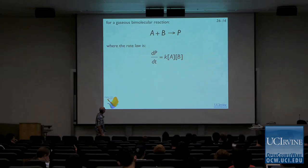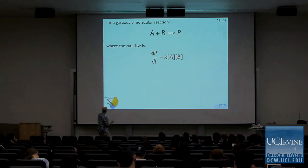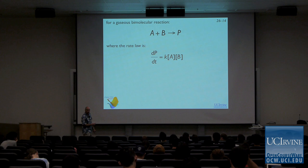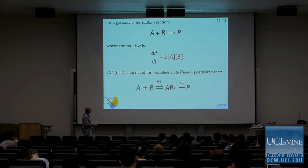Here's the basic idea. A plus B goes to products — we're just going to talk about this generic reaction today. We know the rate law is: rate equals the rate constant times the concentration of A times the concentration of B. These can be pressures or concentrations. Transition state theory says that this reaction actually occurs through this mechanism: A plus B are in equilibrium with something called AB double-dagger, and that reacts in a unimolecular fashion to give us products.